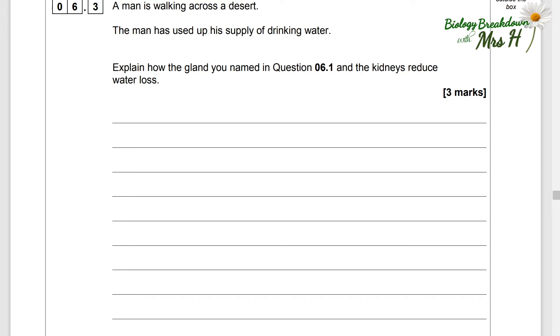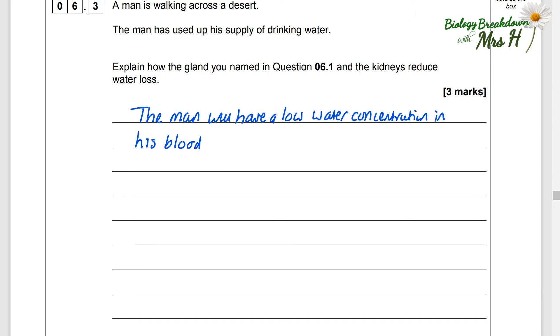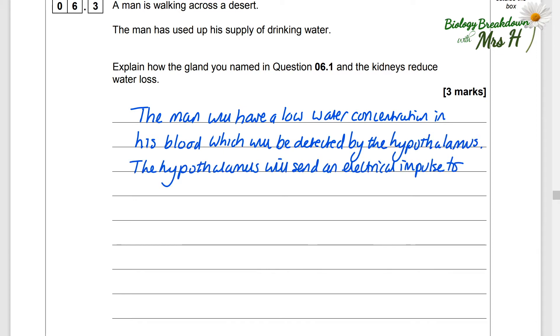We know we've got to talk about the pituitary gland. The man will have a low water concentration in his blood which can be detected by the hypothalamus and the hypothalamus will send an electrical impulse to the pituitary gland. Now I've put that bit in brackets because on the AQA specification you don't actually need to know that it is the hypothalamus that detects it. But I feel like it makes more sense if we put that in there. However, I've put it in the brackets and if you want to ignore it you can.